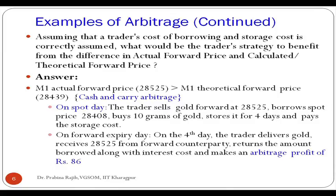The arbitrage profit when the trader undertakes cash and carry arbitrage works out to 86 rupees. On the spot day, the trader borrows 28,408 rupees, buys 10 grams of gold, stores it for 4 days, pays the storage cost upfront, and simultaneously enters into a short forward or short futures contract. On the expiry date, the other set of transactions leads to an arbitrage profit of 86 rupees.